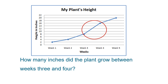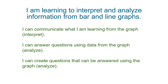The plant grew the most between weeks 3 and 4. I can tell because the line is the steepest between those two points. How many inches did the plant grow between those weeks? At week 3, the plant was 8 inches tall. By week 4, it was 16 inches. That is a difference of 8 inches — the plant grew 8 inches between weeks 3 and 4. We used a line graph to communicate what you were learning, to answer questions using data from the graph, and to create questions that could be answered using the graph.